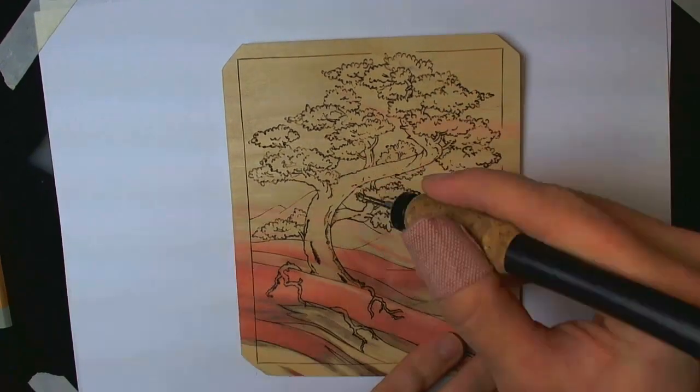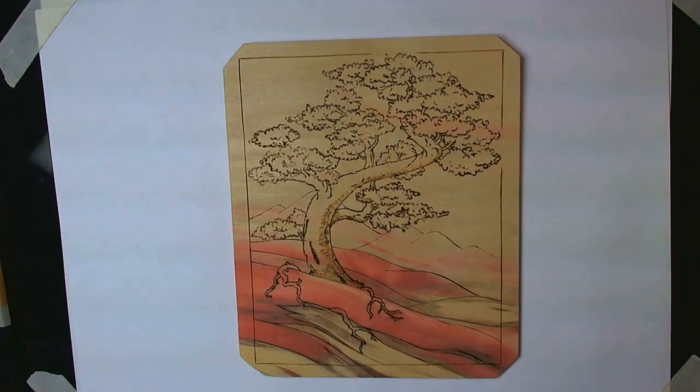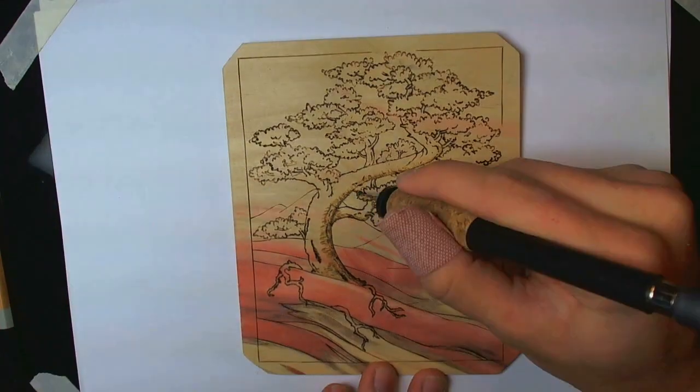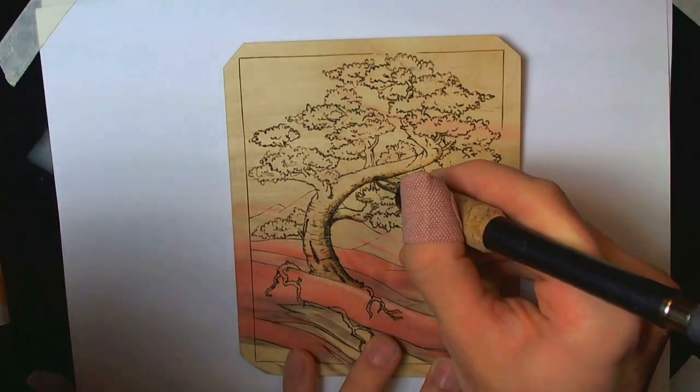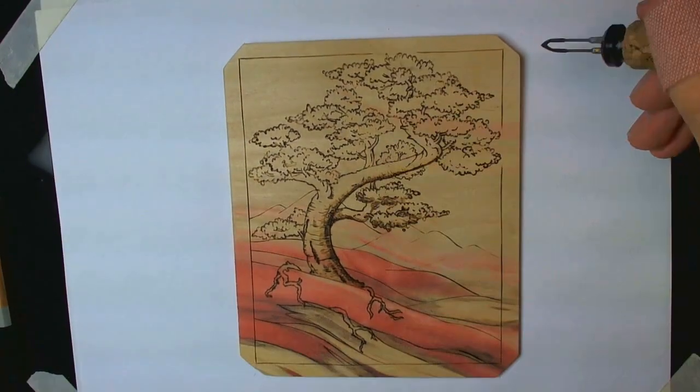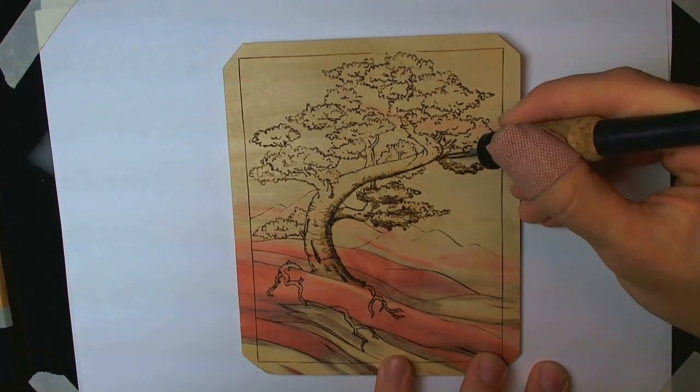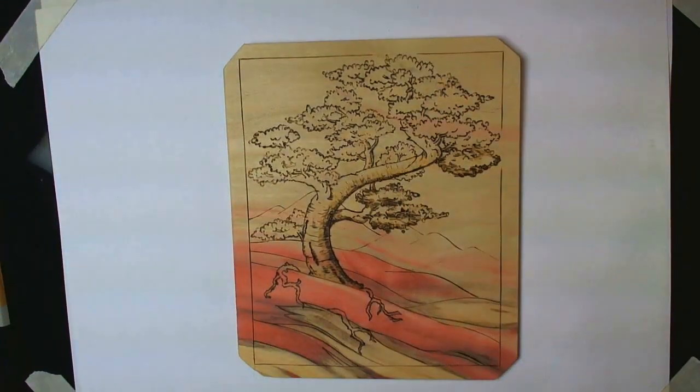I started with a light pencil sketch for this one, since there was something somewhat specific I wanted it to look like. Then I jumped right in. I used a ballpoint tip to do all the outlines on the tree. The trunk, and the branches, and the clumps of leaves.